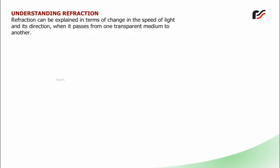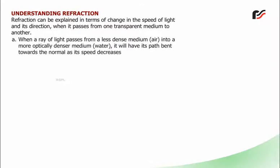Understanding refraction: Refraction can be explained in terms of change in the speed of light and its direction when it passes from one transparent medium to another. When a ray of light passes from a less dense medium, air, into a more optically denser medium, water, it will have its path bent towards the normal as its speed decreases.